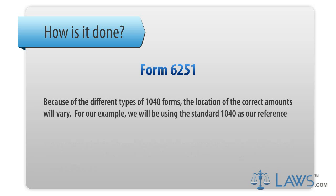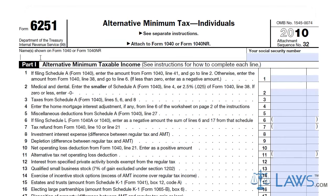Because of the different types of 1040 forms, the location of the correct amounts will vary. For our example, we will be using the standard 1040 as our reference. Enter your name and social security number at the top of the form. Enter the amount on your 1040 line 41 on line 1 of Form 6251.